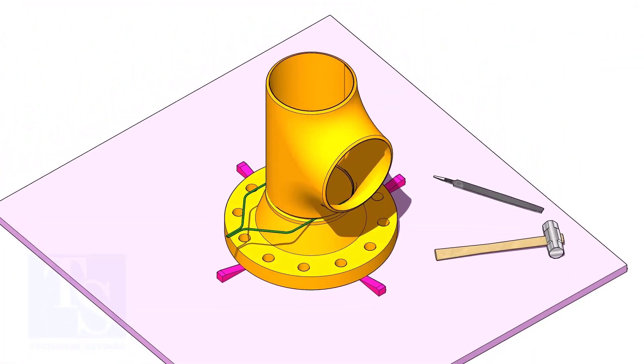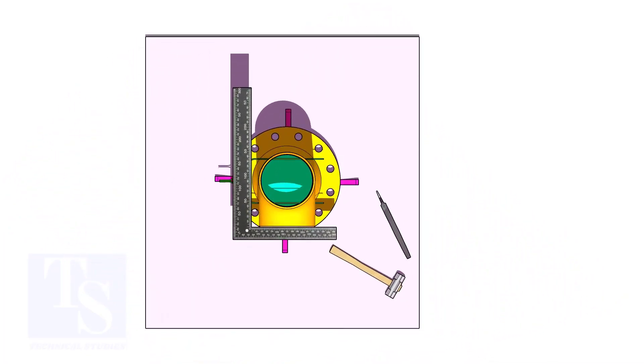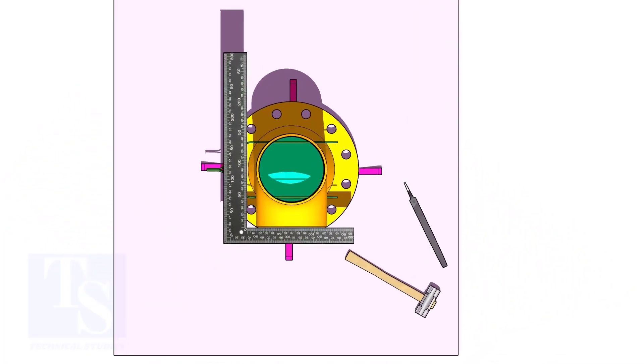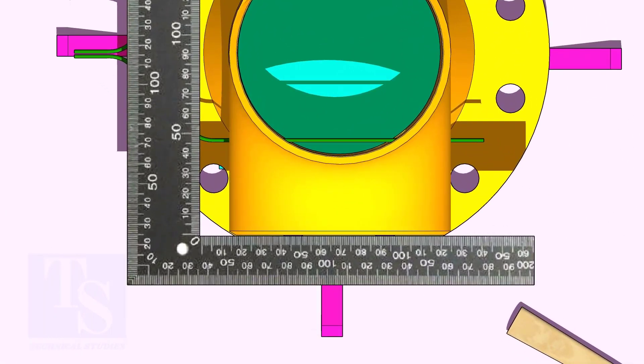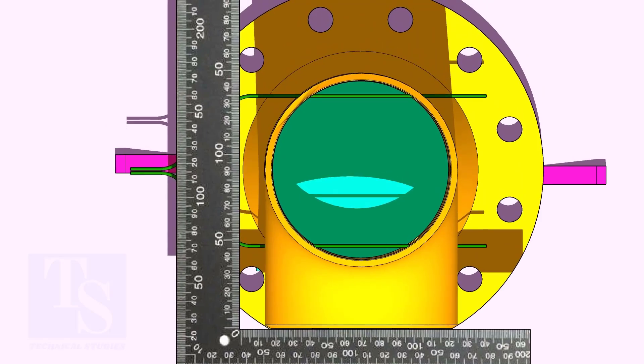Put the tee on the flange. Match the hole center of the flange and the tee face as shown. Correct the overlap.